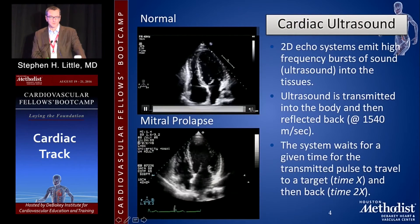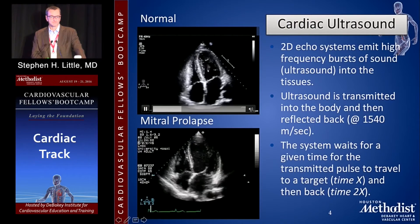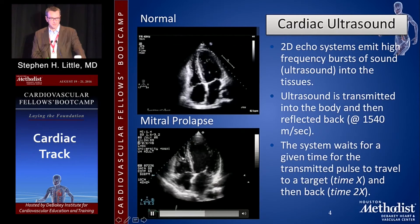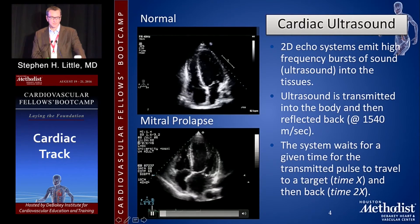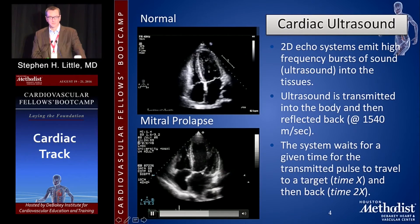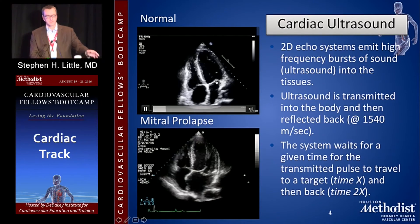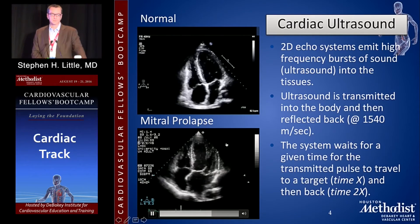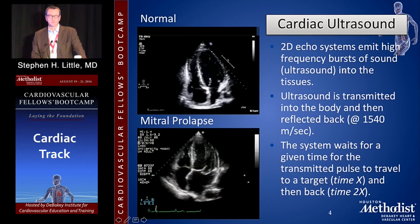This is a normal apical four-chamber view. The probe's right at the apex — you're seeing all four chambers. The left chambers are on the right side of the image. Another example shows prolapse of the posterior leaf of the mitral valve. The only reason the image can make that determination is it sent the ultrasound beam, waited for the return, and through complex Fourier transforms it determines that there's a prolapsing leaflet.